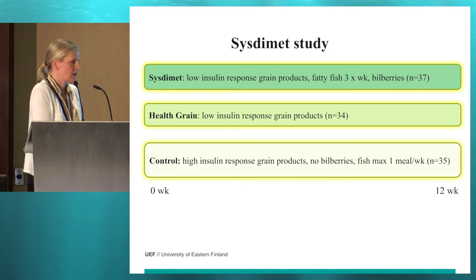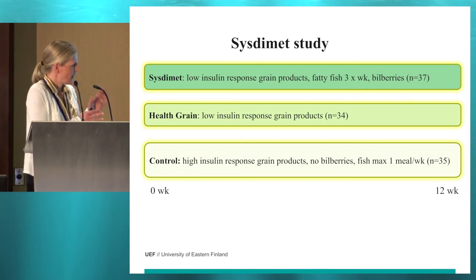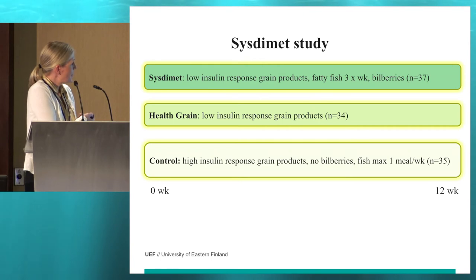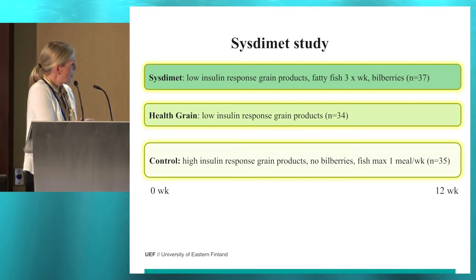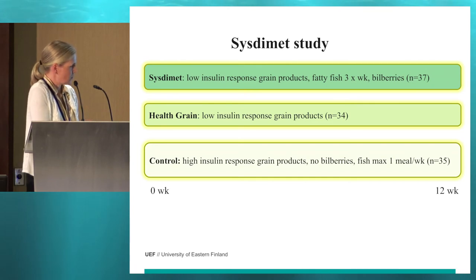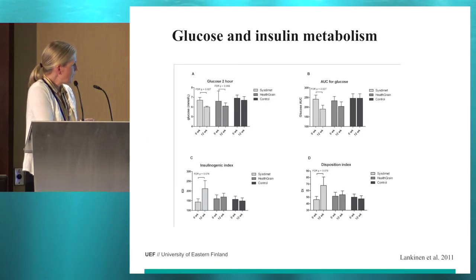Ulf was talking about the SIGA diet study. In Kuopio, we performed a systematic study which was actually a pre-study for that. We had three groups: the systematic group had low insulin response grain products, fatty fish three times per week, and bilberries daily. The healthy grain group had low insulin response grain products. The control group had high insulin response grain products, were prohibited from eating bilberries, and were instructed to consume only one fish meal per week.